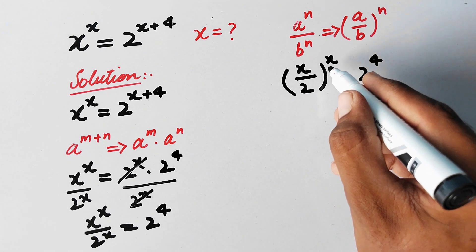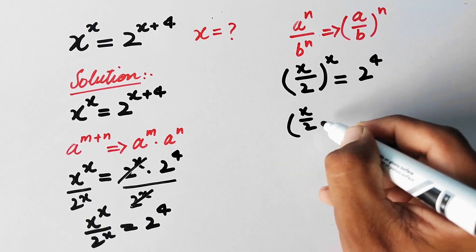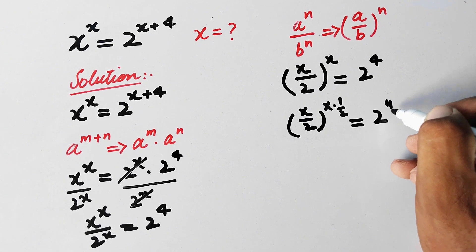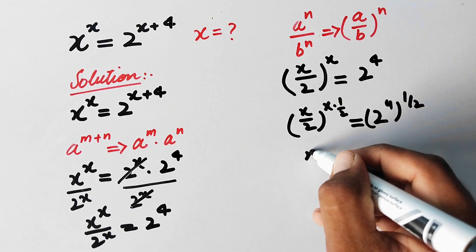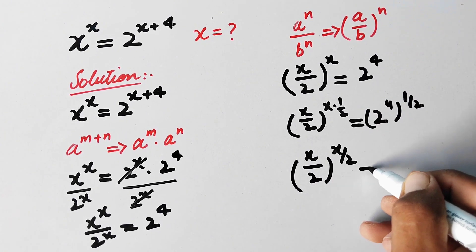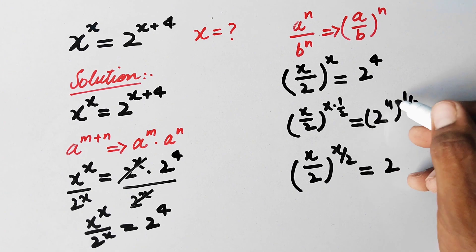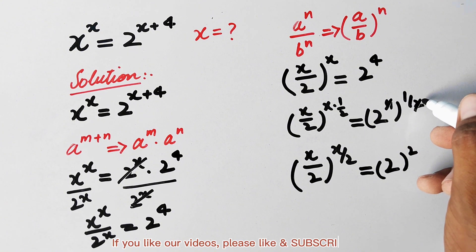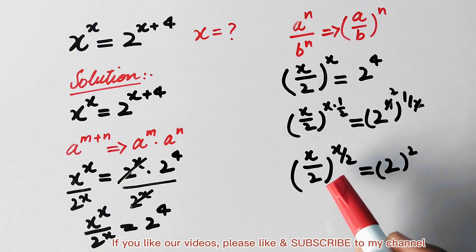Now we will multiply the power of both sides by 1 over 2. So x over 2, whole power x times 1 over 2, is equal to 2 power 4 multiplied by 1 over 2. This gives us x over 2, whole power x over 2, is equal to 2 power 2, which equals 2.